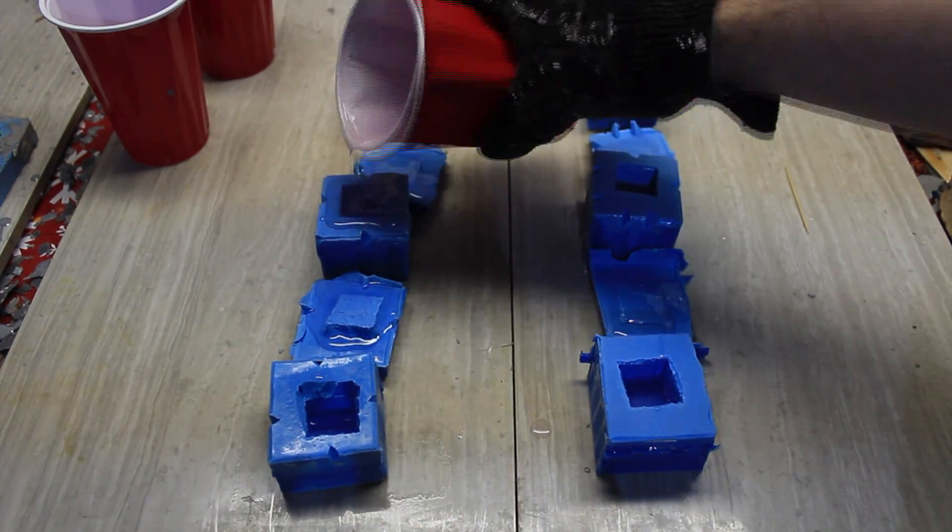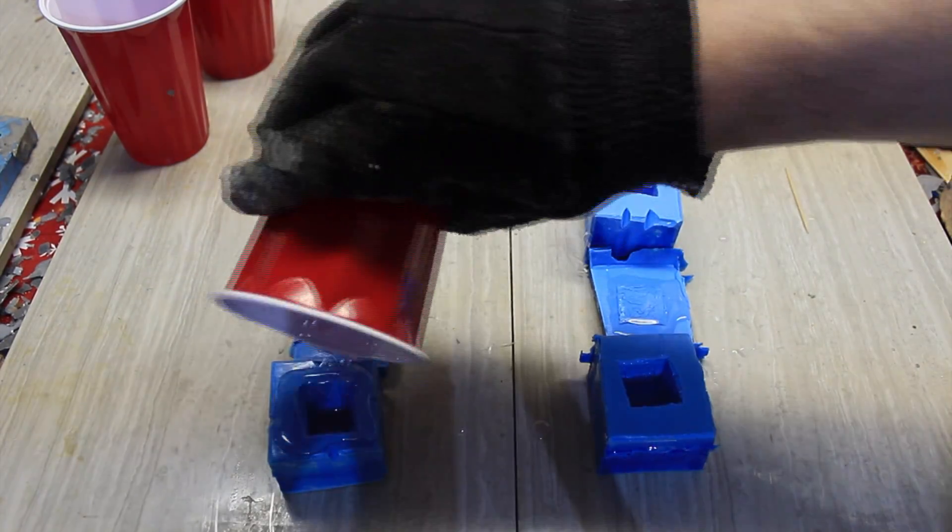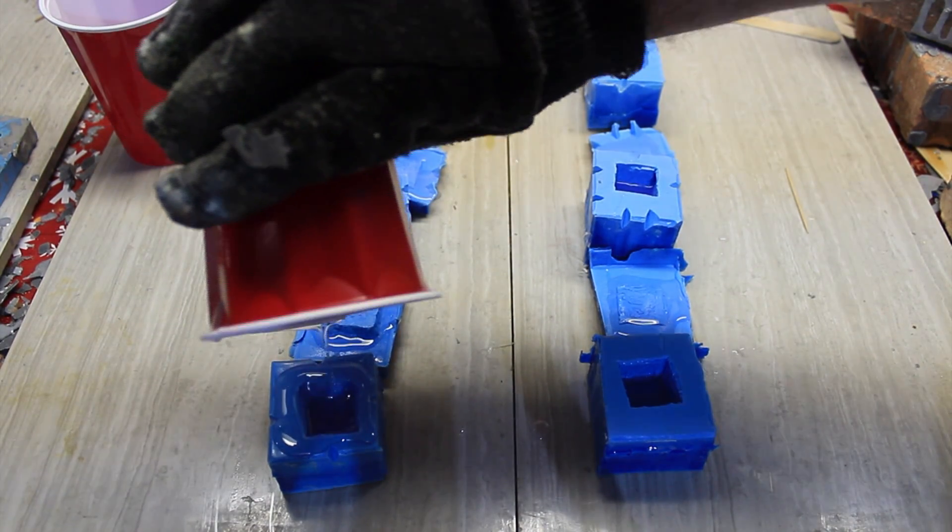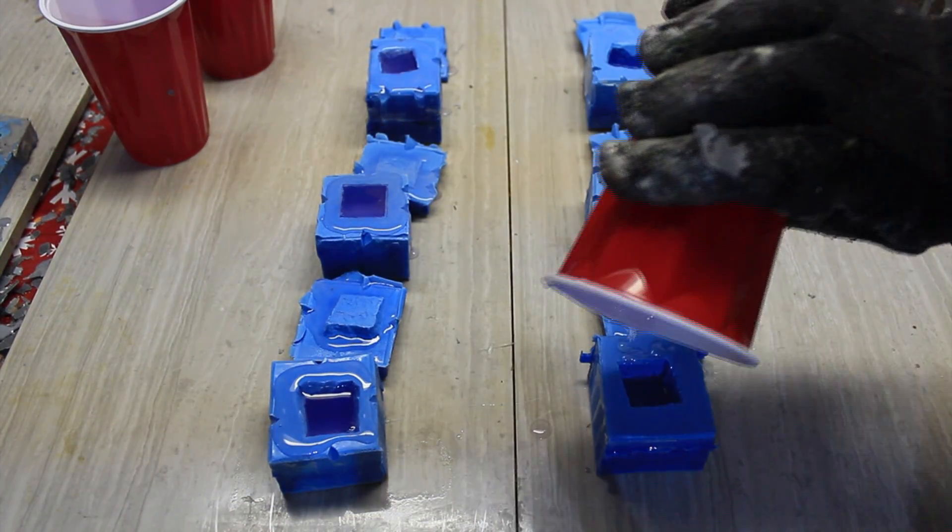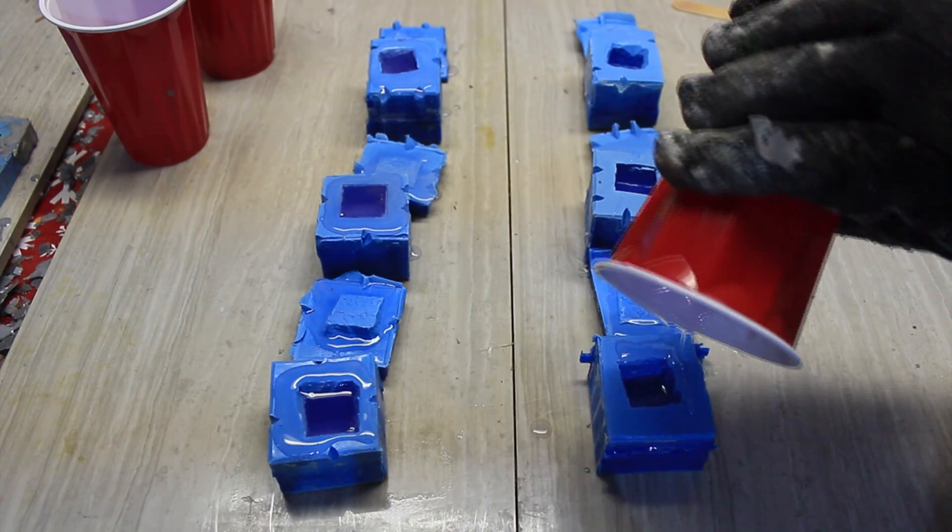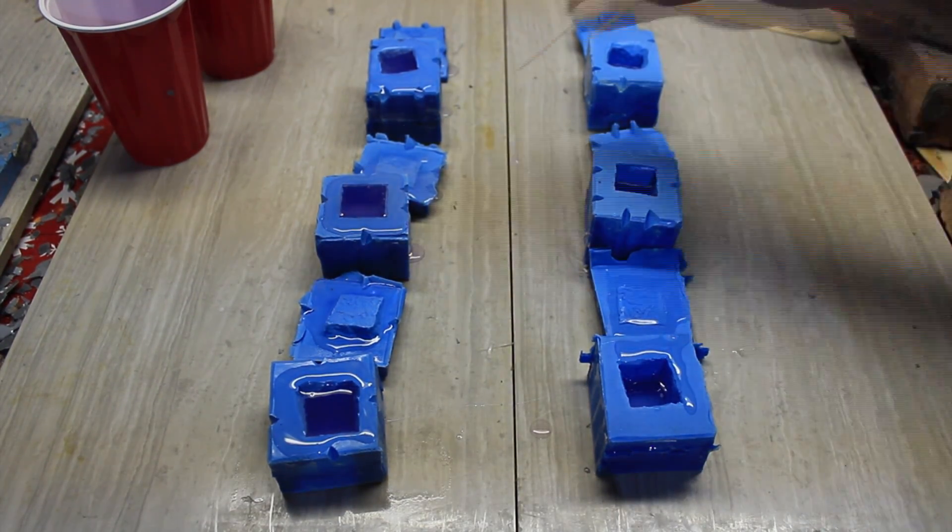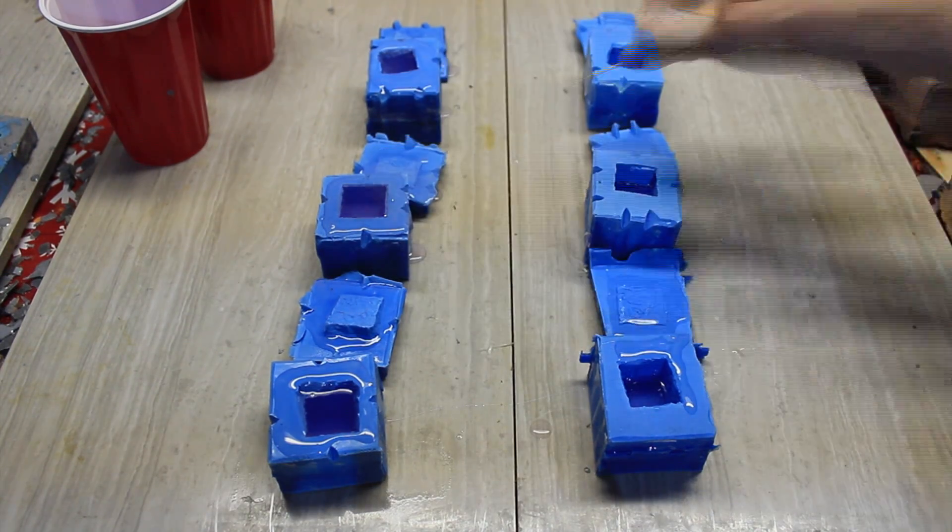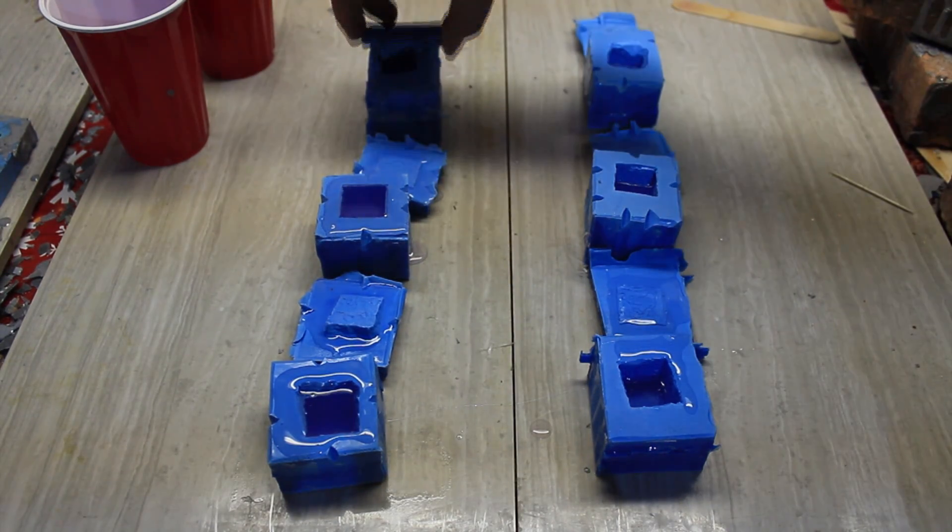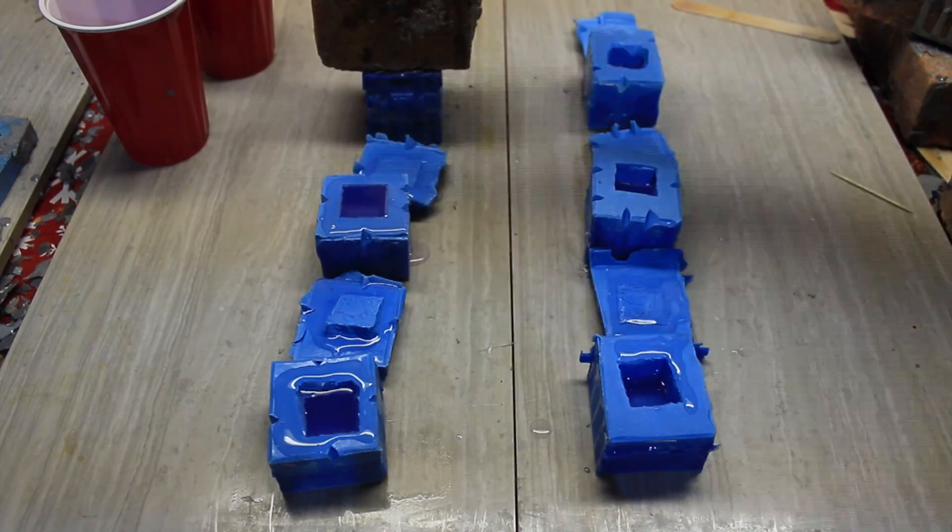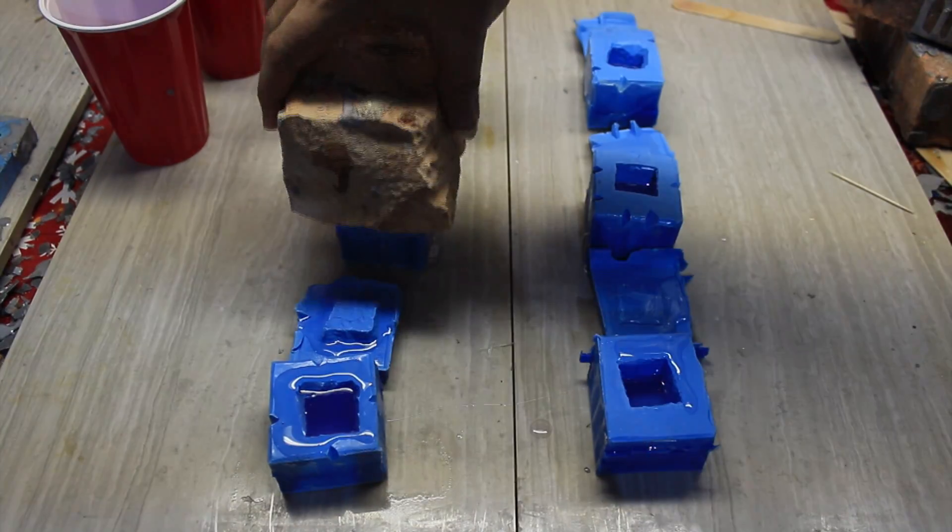Then I pour it along the sides, getting the resin all along the top and letting it flow into the mold. This way I'm not trapping any air bubbles. If I see an air bubble rising, I'll pop it or brush it to the side.